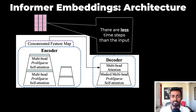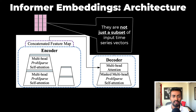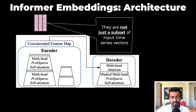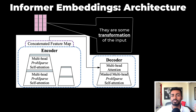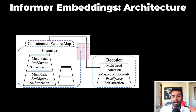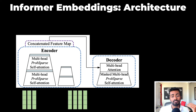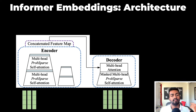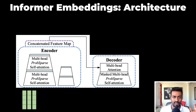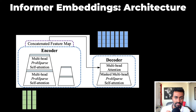These output vectors have less time steps than the input, and they are not just a subset of these input vectors — they are some transformation of the input. Now these vectors are passed into the decoder, and we also pass some subset of the input as context. And we're going to generate the next chunk of seven time steps at the end of the decoder.